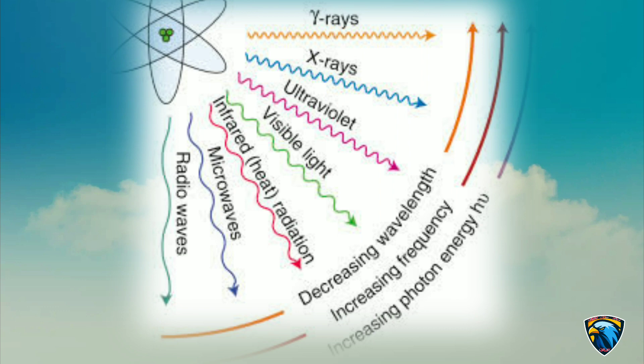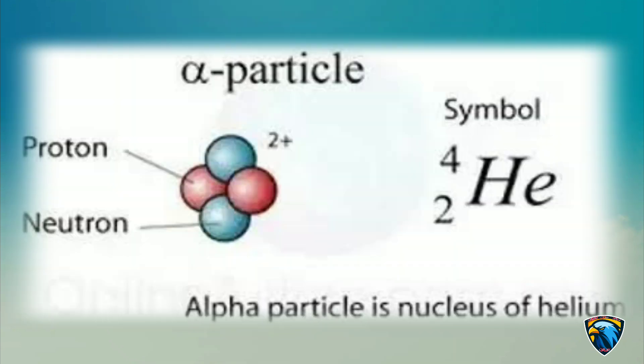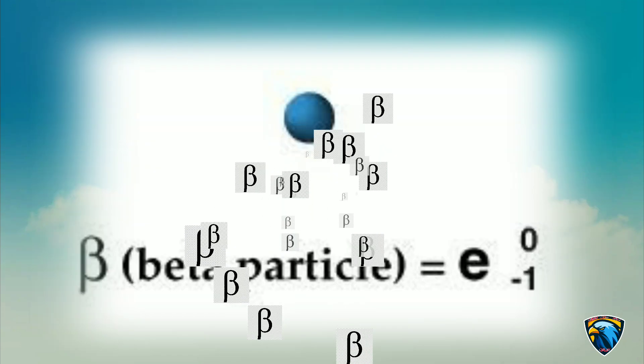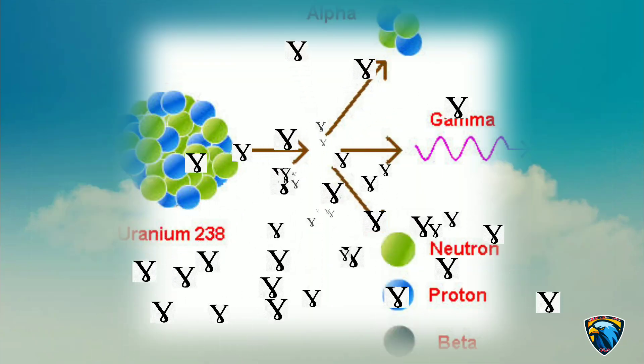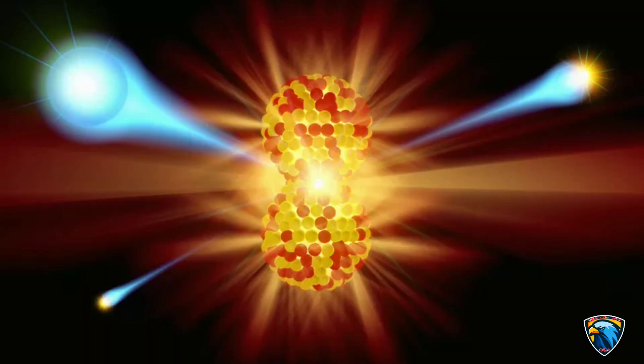In the radioactive process, particles or electromagnetic radiations are emitted from the nucleus. The most common forms of radiation emitted have been classified as alpha, beta, and gamma radiation. Nuclear radiation also occurs in other forms, including the emission of protons or neutrons, or spontaneous fission of a massive nucleus.